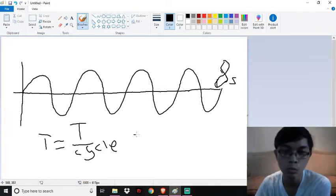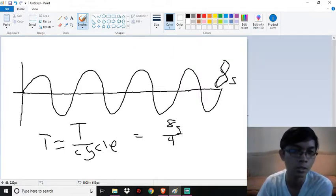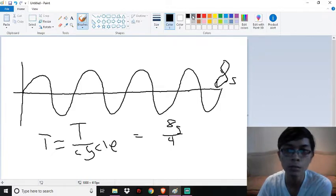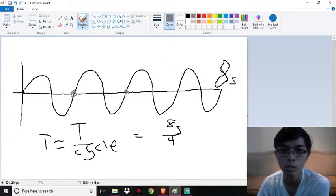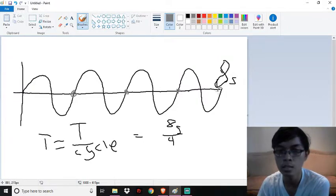So that would be 8 seconds over 4 since we have 4 cycles here. The first cycle ends here, the second cycle is here, the third cycle is here, and the last cycle is here.